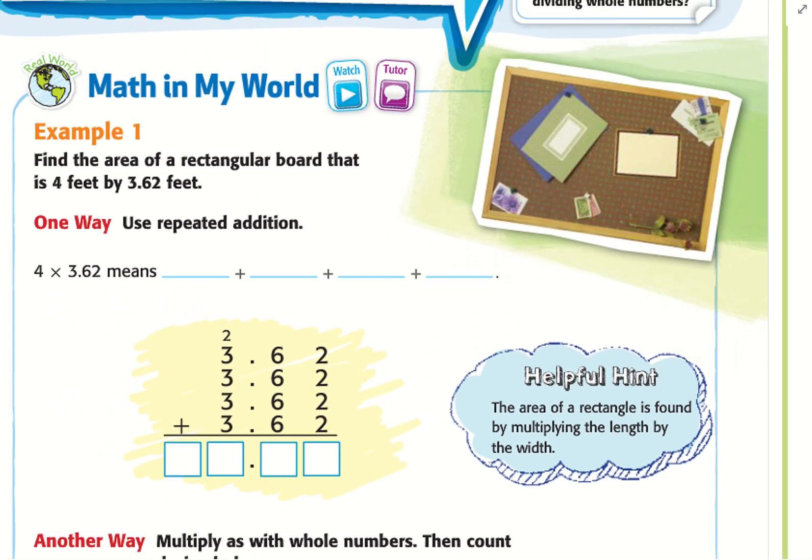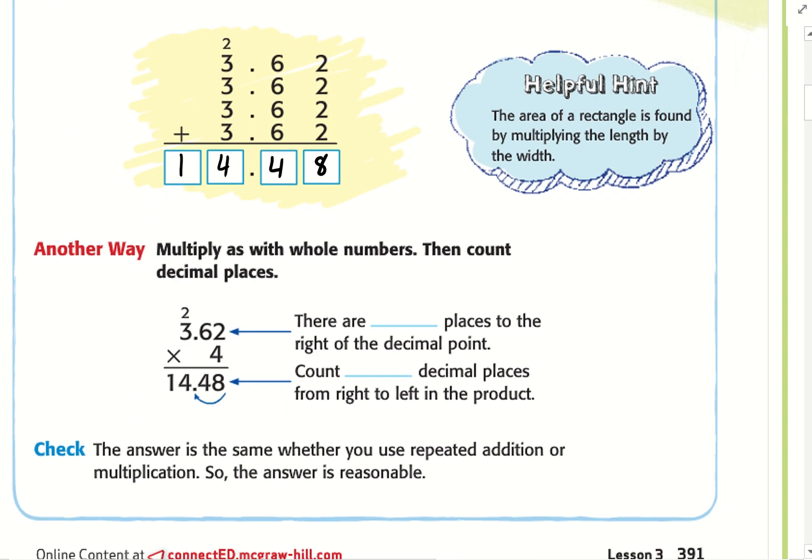4 times 3.62 means we're going to add this together four times. 2 plus 2 plus 2 plus 2 equals 8. 6 plus 6 plus 6 plus 6 equals 24. 3 plus 3 plus 3 plus 3 is 14. So we get 14.48. This is one way to check our work.